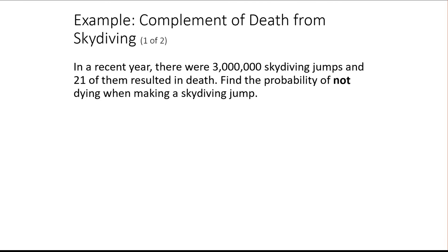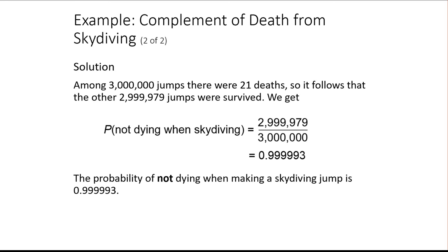For example: in a recent year there were 3 million skydiving jumps and 21 of them resulted in deaths. Find the probability of not dying when making a skydiving jump. We know the probability of dying is 21 out of 3 million, so everyone else lived. If we do 3,000,000 minus 21, we get 2,999,979 survivors. So the probability of not dying would be 2,999,979 out of the 3 million total skydivers — a very large number close to 1, meaning if you go skydiving there is a good probability you will not die.